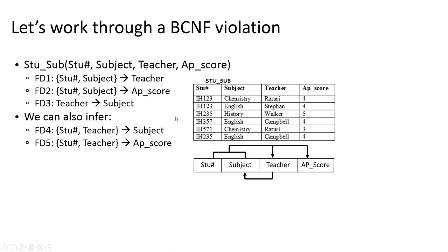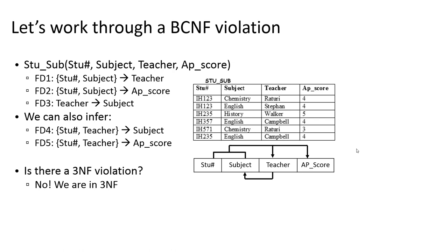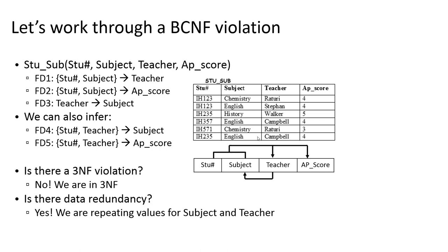At this point, is there a third normal form violation? No — we don't have any non-key attributes functionally determining non-key attributes. Our only non-key attribute is AP score, and it doesn't functionally determine anything. So we're in third normal form. However, there is data redundancy: every time we repeat a teacher and the subject they teach, that's redundant. Campbell teaches English appearing twice — the second occurrence tells us nothing new. There is also a BCNF violation: in FD3, teacher is not a superkey. FD1, 2, 4, and 5 are fine because student-subject and student-teacher are superkeys, but teacher alone is not.